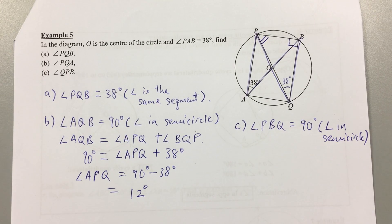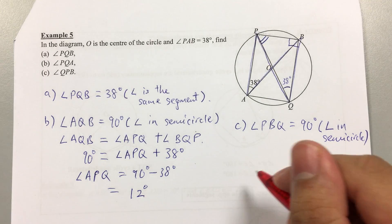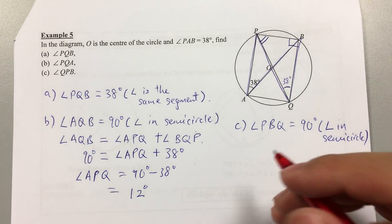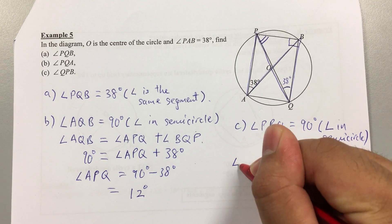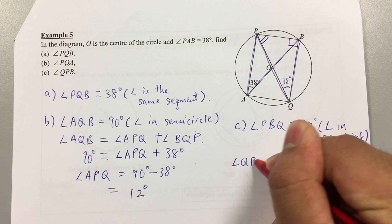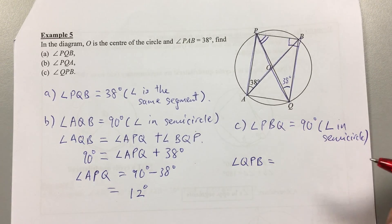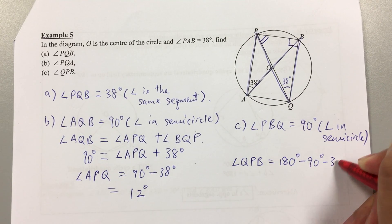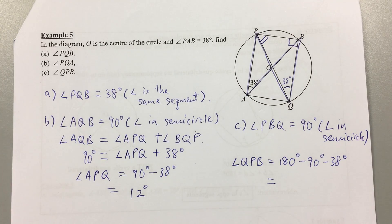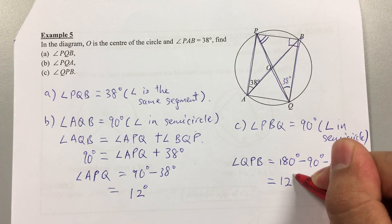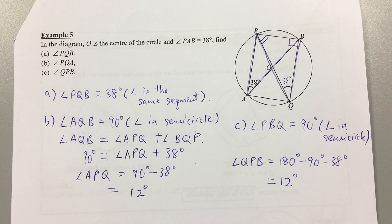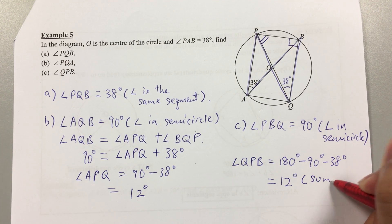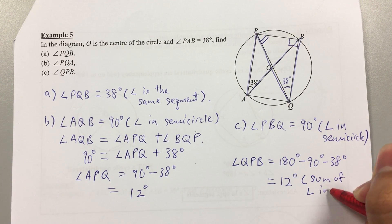Since angle PBQ is 90 degrees, the sum of angles in triangle PQB gives us: angle QPB equals 180 minus 90 minus 38 degrees, which equals 52 degrees. The reason is the sum of angles in a triangle.